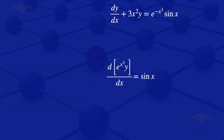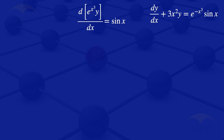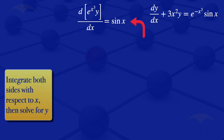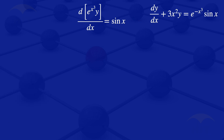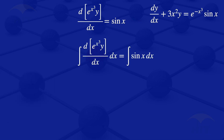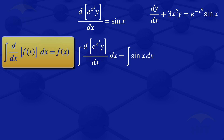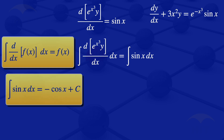We now integrate both sides of this equation with respect to X, then solve for Y. The integral of the derivative of exponent of X cubed multiplied by Y with respect to X equals the integral of sine of X with respect to X. When integrating the derivative of a function, we get the function itself. So the left hand side gives us exponent of X cubed multiplied by Y, and the right hand side gives us minus cosine X plus the constant of integration C.